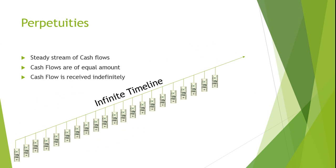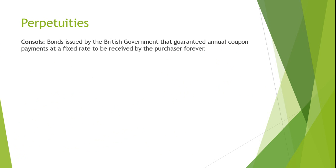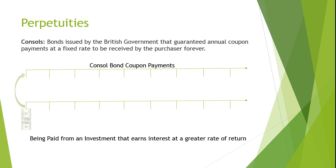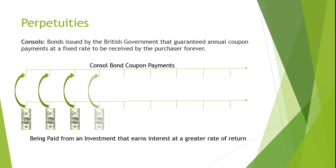A true perpetuity is rare, but they are not non-existent. Around 1871, the British government issued a bond that was a true perpetuity known as a consul. The purchaser of a consul was entitled to receive an annual coupon payment at a fixed rate forever. You may wonder why or how a government or entity would want to agree to such a long-term commitment of payments. They do this because they can guarantee payment by reinvesting the money from the purchaser into investments that earn a higher return.